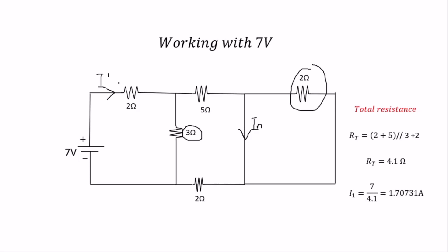The next thing to do is find i1. The total current coming here with total resistance 4.1 ohms and the source voltage of 7 volts means that i1 will be 7 over 4.1, which gives you 1.70731 amps.